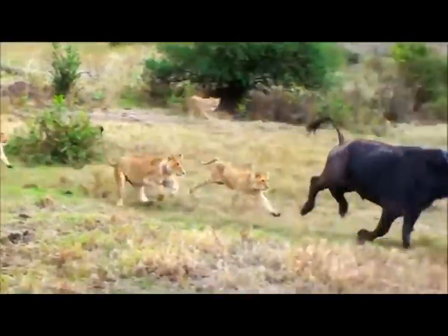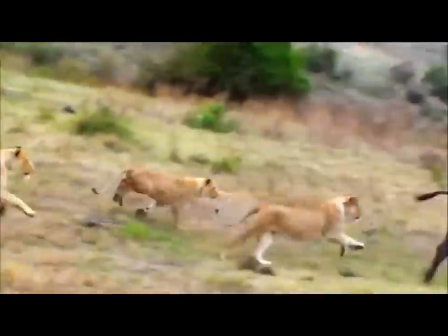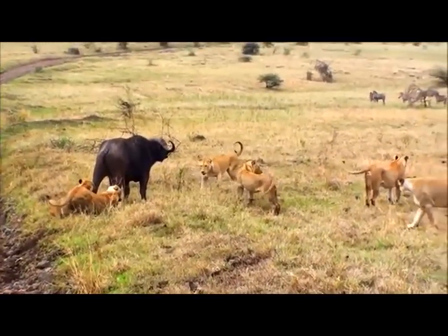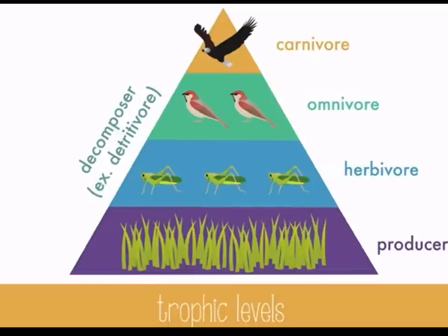These animals are grouped into specific energy transference levels, known as trophic levels. The first trophic level are known as producers — these are any plants which photosynthesize. The second trophic level are known as herbivores — these are animals that strictly eat plants.